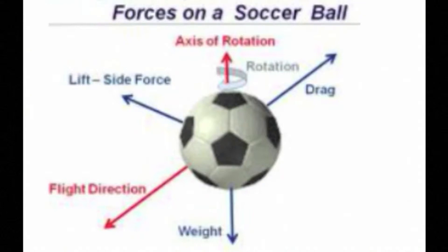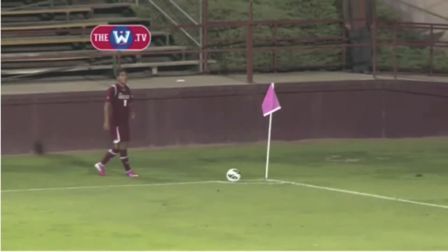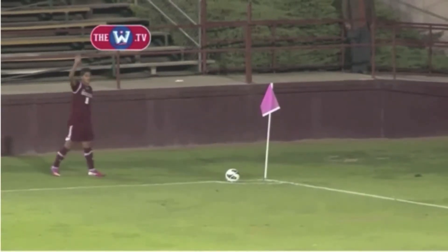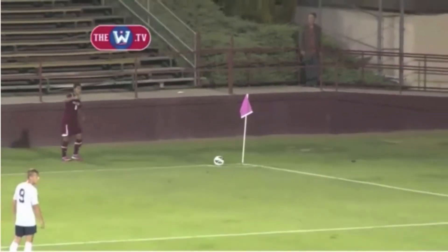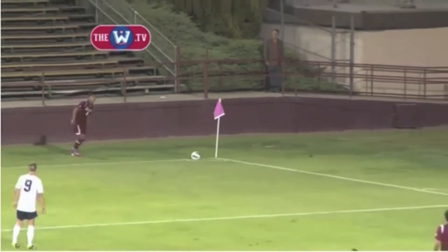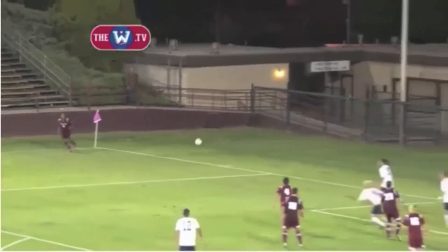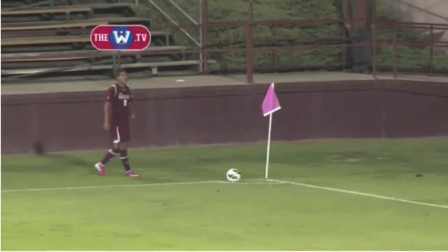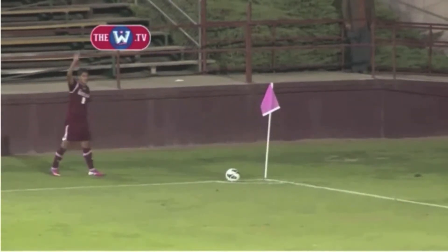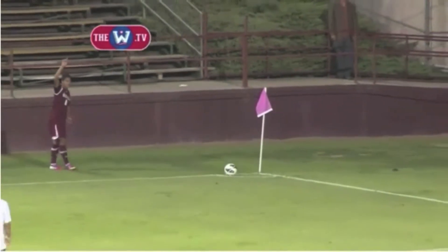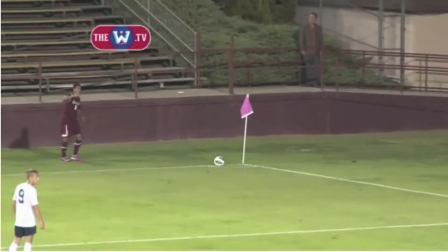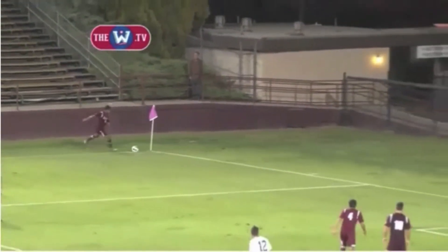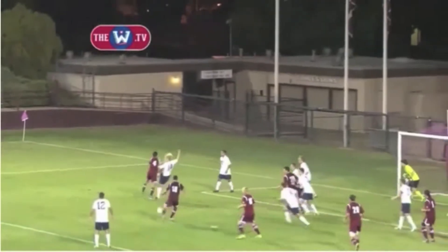Gravity is another force that affects soccer. If there is no gravity, the soccer ball will fly through the air and never come back. Players also stay on the ground because of gravity, and altered gravity can change how high or low the ball goes. Momentum affects how far the soccer ball goes. If you have a lot of momentum when you kick the ball, it will go faster. If you do not have enough momentum, the distance the ball travels will still be less, no matter how hard you kick.